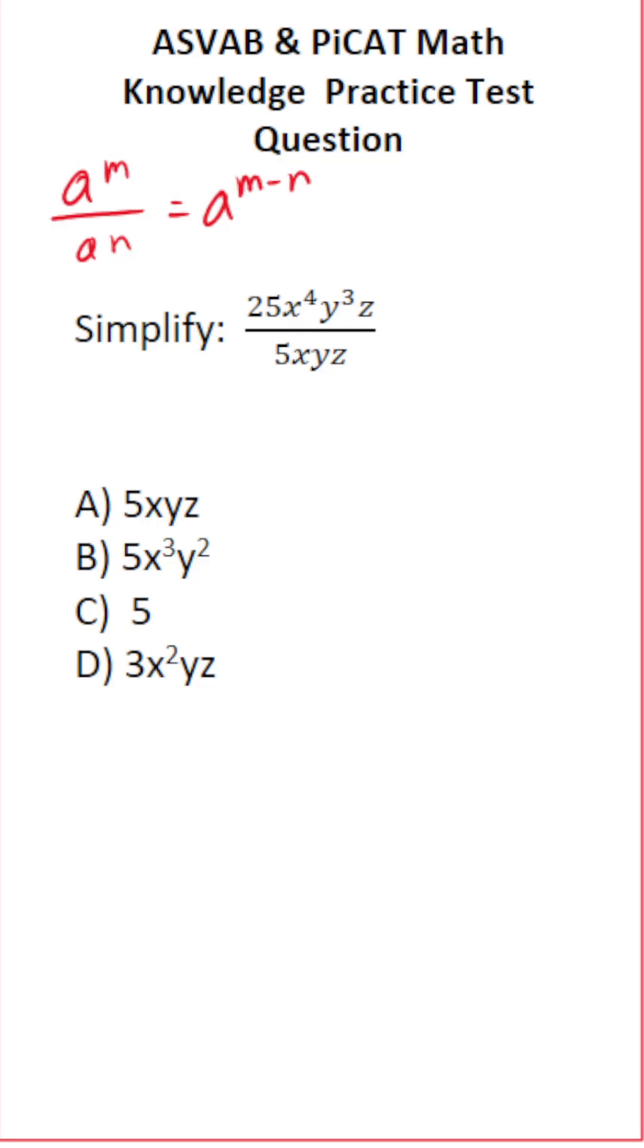If the exponent is positive it goes in the numerator. If it's negative it goes in the denominator and you make the exponent positive. So let's get started.